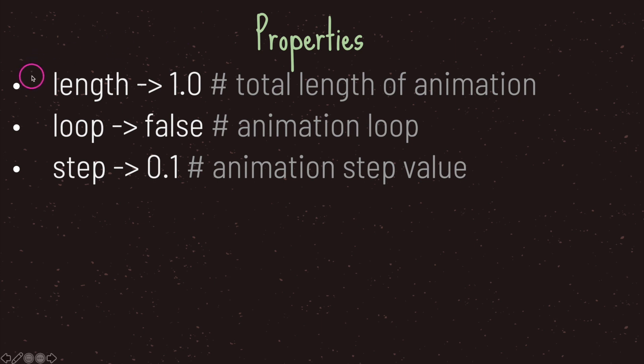Length is the total length of your animation and by default it's set to a float value of 1.0, which means one second. The loop property is set to false by default, meaning you do not want your animation to loop — by default the animation runs one time. Lastly, the step property is set to the float value 0.1 by default, representing the animation step value.